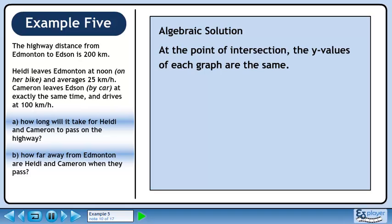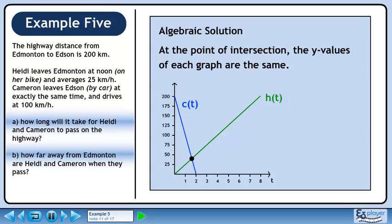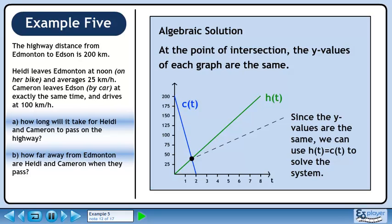At the point of intersection, the y values of each graph are the same. If we inspect the system of equations drawn earlier in this example, we can see that both the blue graph and the green graph have the same y value at the point of intersection. Since the y values are the same, we can use h of t equals c of t to solve the system.